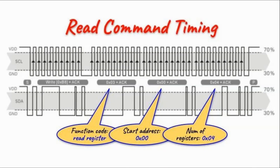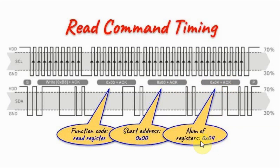This is the timing diagram to enable reading from the data register. The microcontroller sends the start pulse, then the write address. The sensor replies with acknowledgement. The microcontroller sends the function code — read register, hex value 03 — and the sensor acknowledges. The microcontroller then sends the start address of the data register (0), the sensor acknowledges, then the microcontroller sends the number of registers to read: 4, covering the 16-bit values of humidity and temperature. The sensor acknowledges and the transmission ends with the stop pulse.